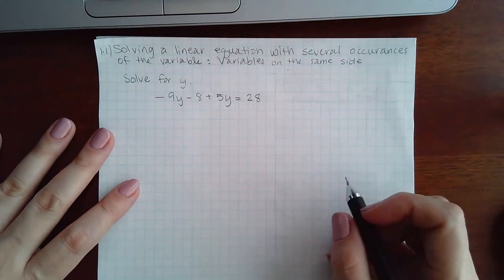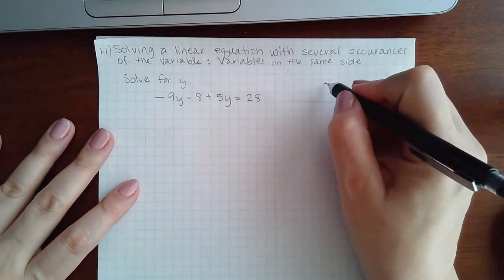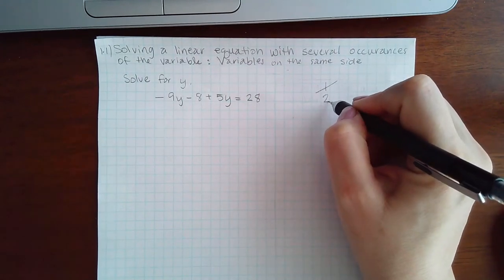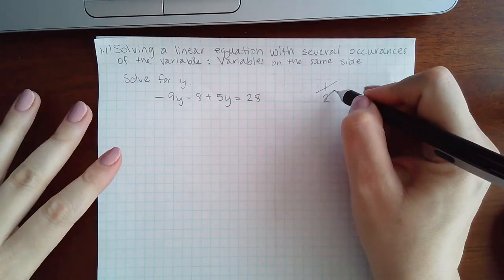So here we go through the same six steps. First step is to eliminate fractions. I don't have any. Second step is to eliminate parentheses. I don't have any.